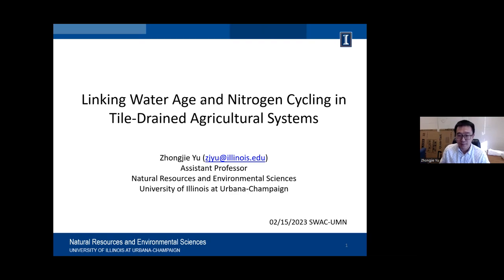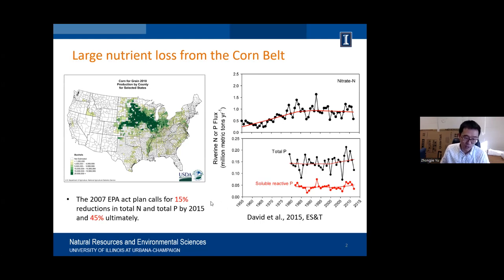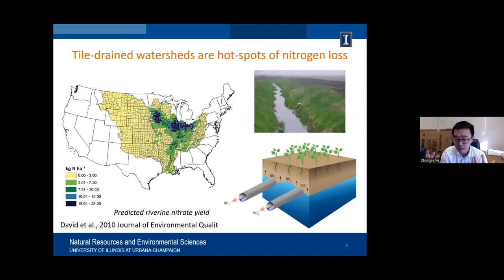We're living in the upper Midwest region, which is one of the most productive regions in the world in terms of corn and soybean production. But the side effect is there is a lot of nutrient loss from this region. In 2007, the EPA called for a reduction plan — a 50% reduction by 2015 and 45% ultimately. But by 2015, we didn't see any improvement in total nitrogen load measured at the mouth of the Mississippi River basin. There are a lot of publications arguing the importance of tile drainage in this region as a hotspot of nitrogen loss.